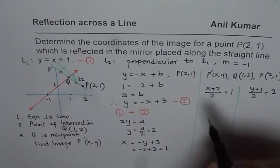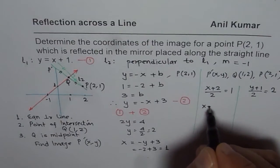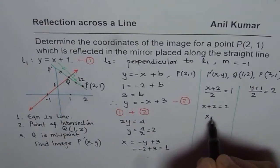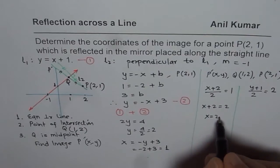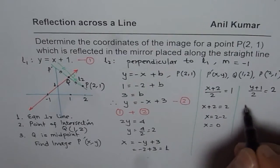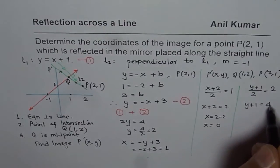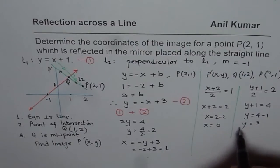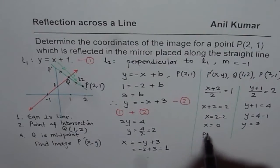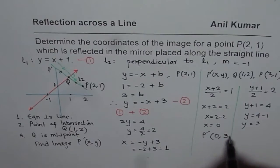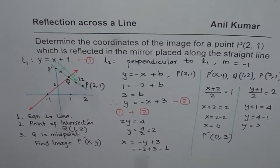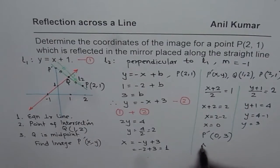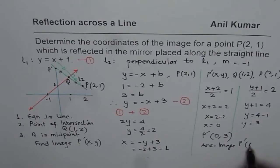Solving: cross-multiplying gives x plus 2 equals 2, so x equals 0. For y: y plus 1 equals 4, so y equals 3. We get the image point P dash as (0, 3). This point is actually the y-intercept of the second line. And that is our answer — the image P dash is (0, 3).